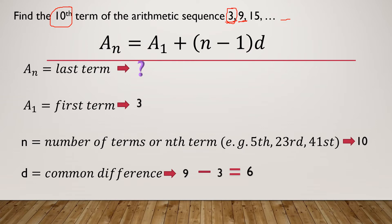Keep in mind that it is not always that we use the second term minus the first term. We may also use a different term. If we use the third term, which is 15, the computation becomes 15 minus its preceding number 9, which still gives us the same common difference of 6. So it is your choice which term you use. Since we have completed all the required data, we may now use this information to find the 10th term.